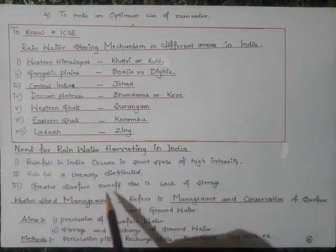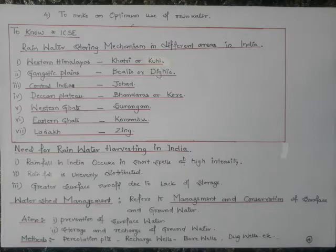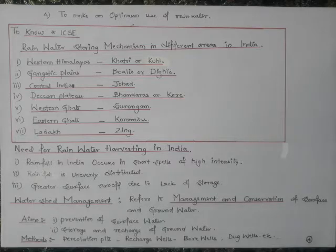Greater surface runoff occurs due to lack of storage. Rainwater on a large scale is just allowed to flow without being stored, causing surface runoff, soil erosion, and soil depletion — productive soil is washed away and agriculture ultimately suffers.